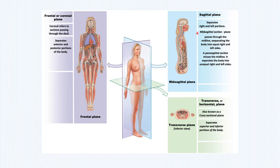The second one is going to be the sagittal plane. Sagittal means midsection, so there's going to be a mid-sagittal section which will pass through the midline of the body. Again, these are imaginary lines, and it helps us separate the body into right and left portions.